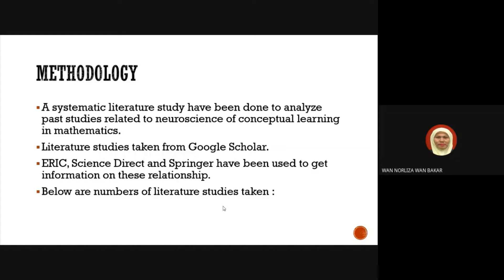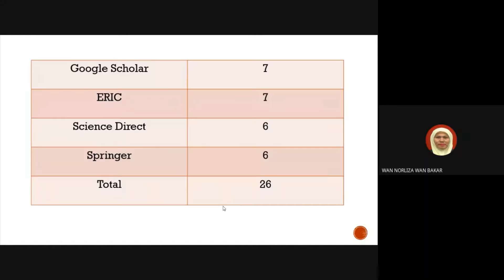Below are the numbers of literature studies taken: from Google Scholar, 7; from ERIC, 7; from Science Direct, 6; from Springer, 6; and the total is 26.